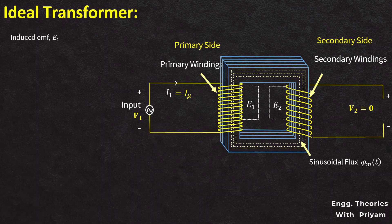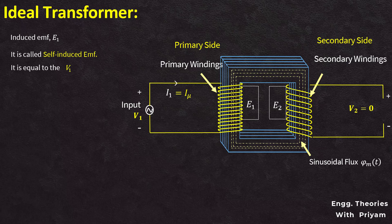This induced EMF e1, better known as the self-induced EMF, is equal to the alternating supply voltage V1 at every instant of time, and it is in phase opposition with the alternating supply voltage V1. So we can write e1 is equal to minus V1. This relation can be explained by Lenz's law.